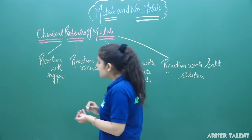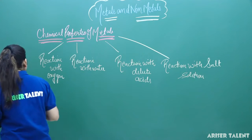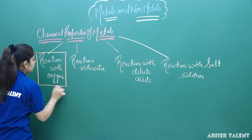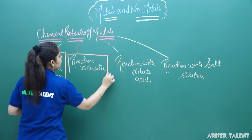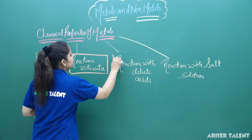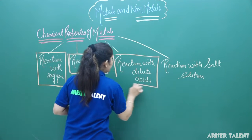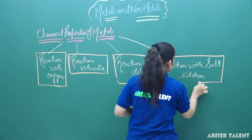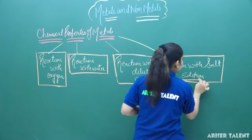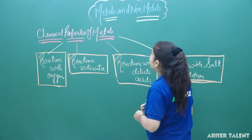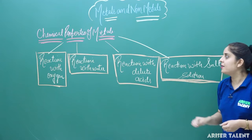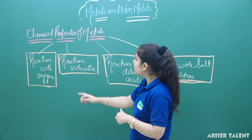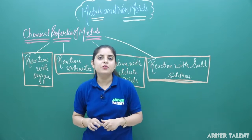These are the topics we are going to cover today about metals. First is reaction with oxygen, second is reaction with water, third is reaction with dilute acids, and fourth is reaction with salt solution. We will see the different reactions and different behavior of metals in all these reactions. Let's start with our first reaction — reaction with oxygen.